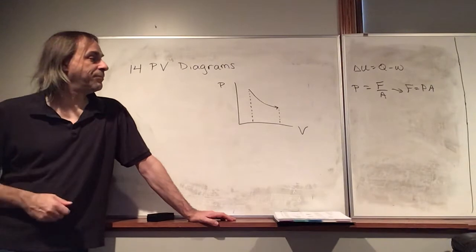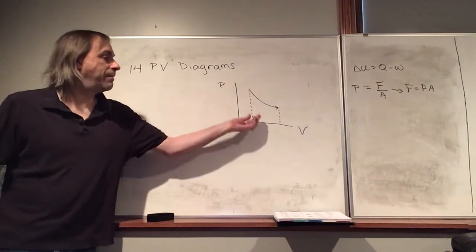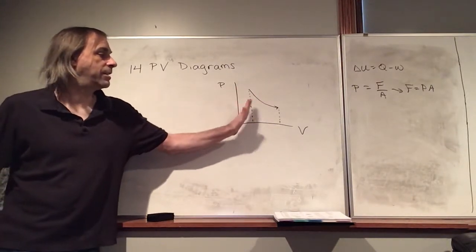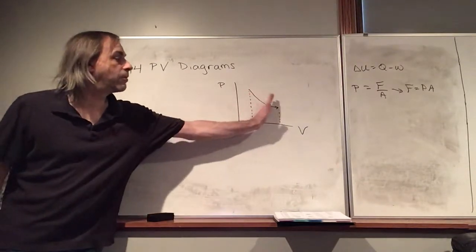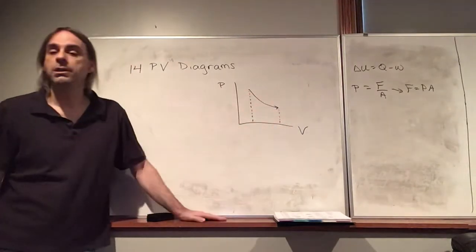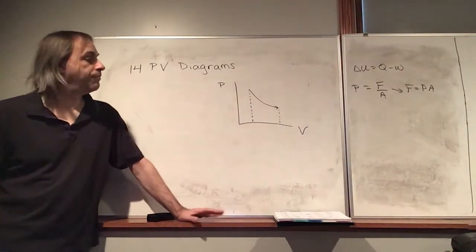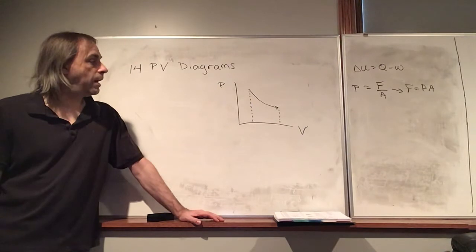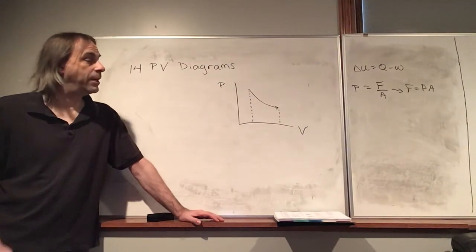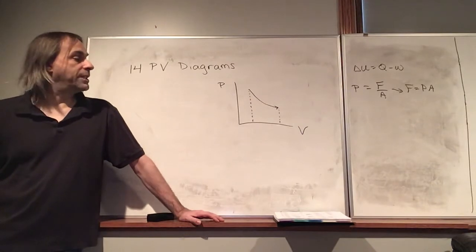If you've ever taken calculus, you can approximate this area by little rectangles — basically, this is just integration. You just integrate it. But we're just going to state that on any PV diagram, the area under the curve is equal to the work.